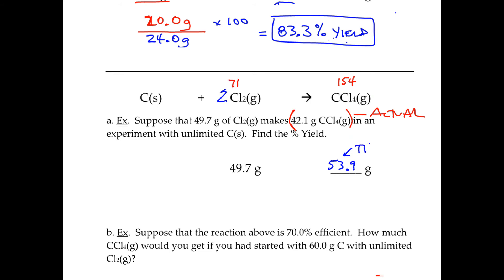And again, that is the theoretical. So to find the percent yield, we're going to take our actual, which is 42.1 grams, divided by our theoretical, which is 53.9 grams times 100, and that's going to give you a 78.1 percent yield.